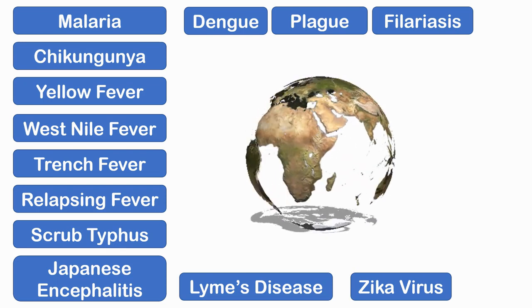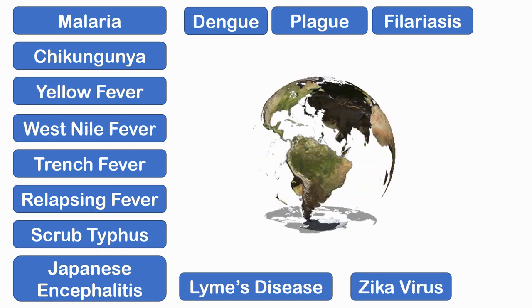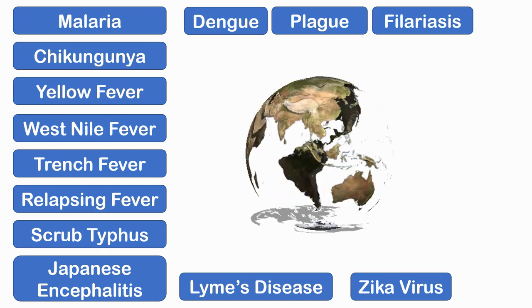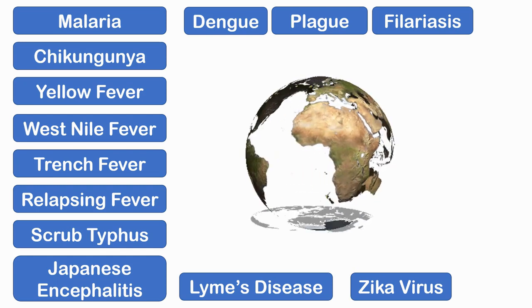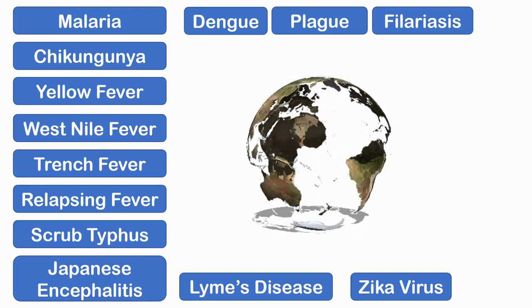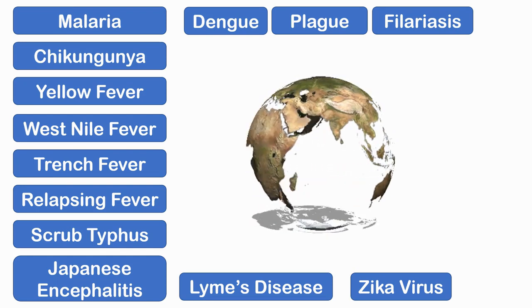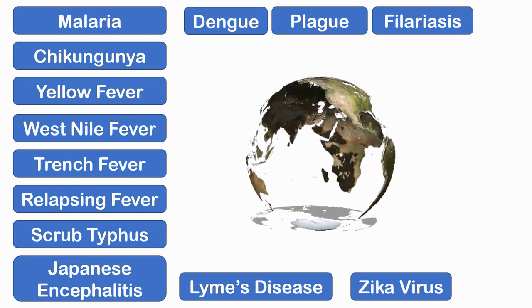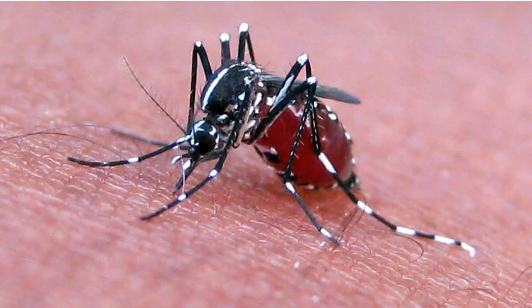These are examples of some of the deadly vector-borne diseases. It is therefore important to know more about these vectors so that we can avoid, control, or eradicate them. Arthropods have different mechanisms for transmission of pathogens into humans.